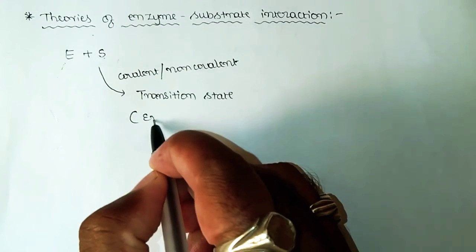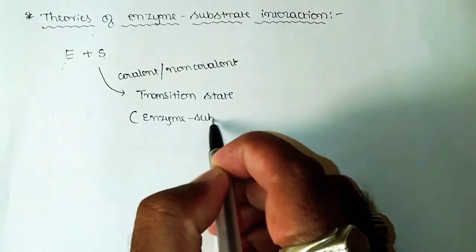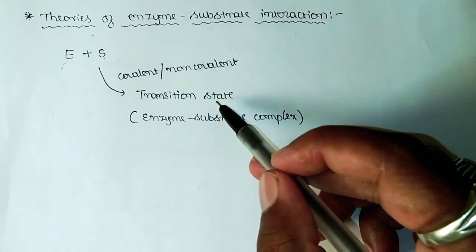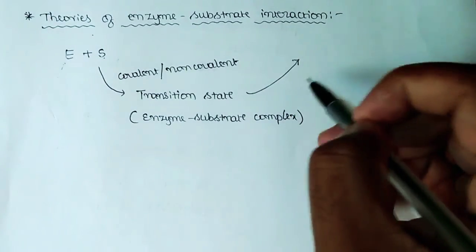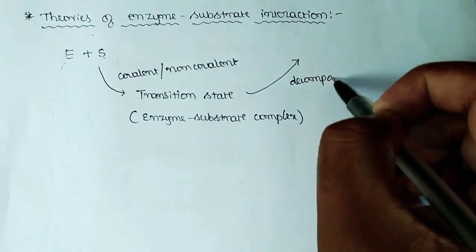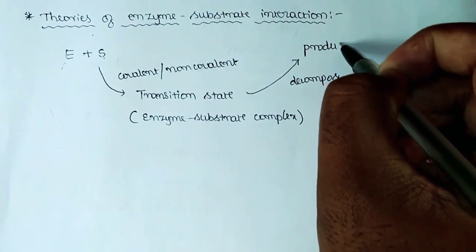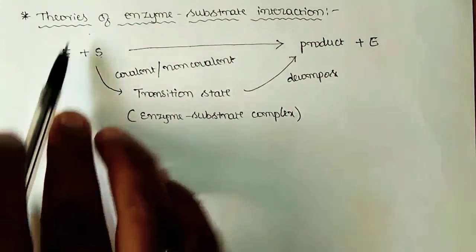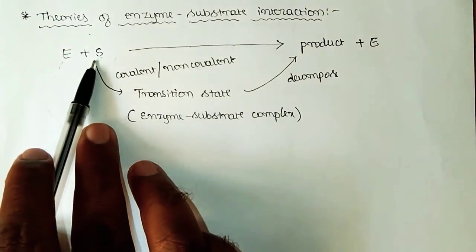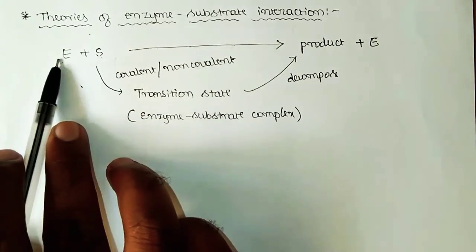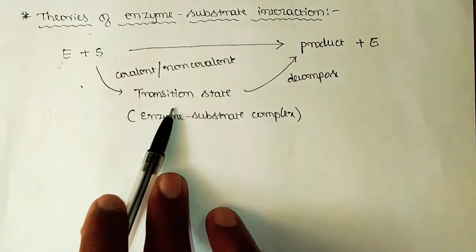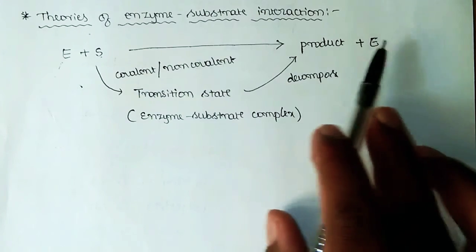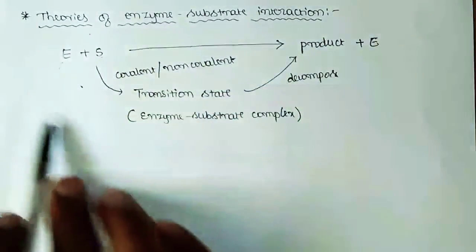That combination results in the formation of a transition state called the enzyme-substrate complex. This enzyme-substrate complex will decompose so as to produce the product, with regeneration of the enzyme. This is the actual reaction pathway in enzyme-catalyzed reactions: enzyme combines with substrate through covalent or non-covalent interactions, forming an enzyme-substrate complex, which upon decomposition produces the product while regenerating the enzyme.